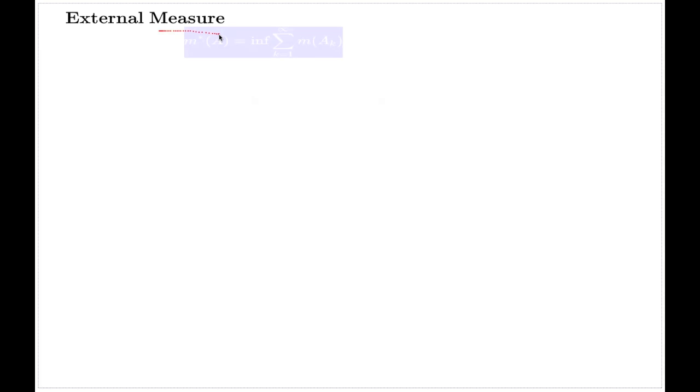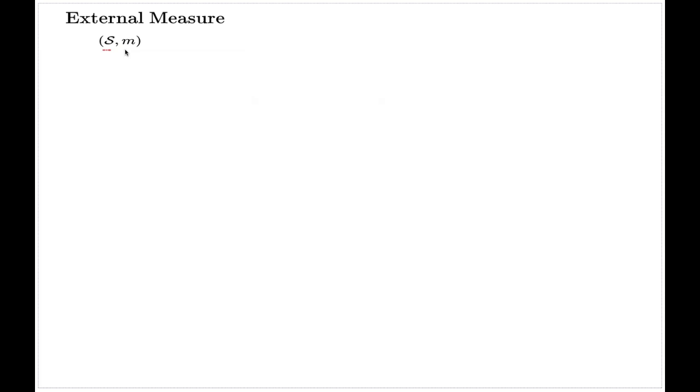Note that although we call it a measure, the external measure will not be a measure in the way we understand measure — it will not be an additive function. We start with a couple (S, M) where S is a semi-ring and M is a regular measure on a semi-ring, and we define the external measure denoted M*.